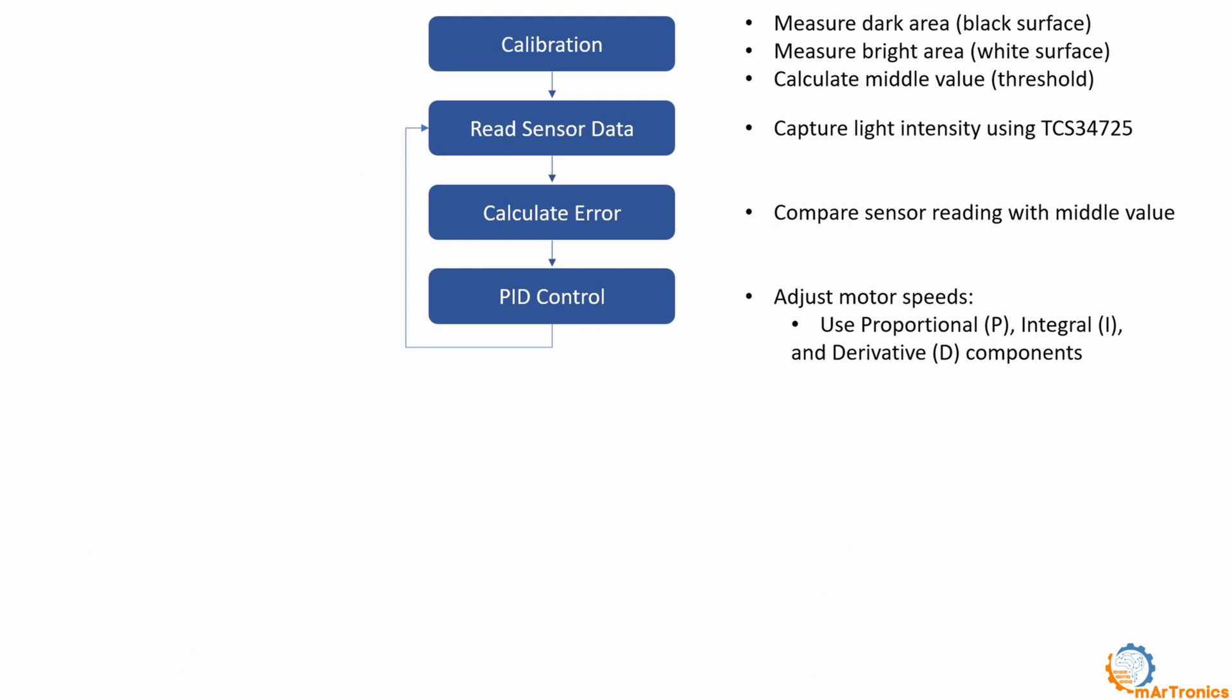At the code level, we have this sequence. First, the robot performs a calibration, where it turns to the left and then measures the value of the dark place. Then it turns to the right and measures the value of the light place. Then, the average value is calculated from these two values, which means the measurement value at the edge level. Then it reads the sensor value and in parallel calculates the error and corrects this error using PID control. And so it repeats this loop.